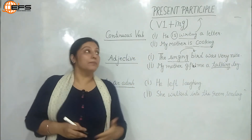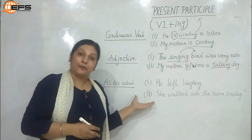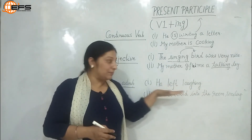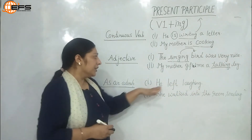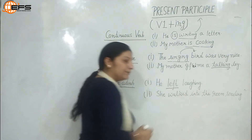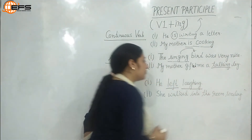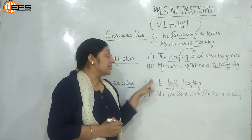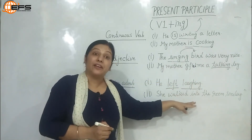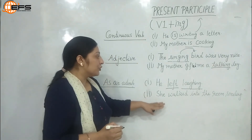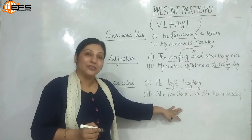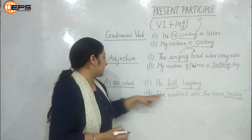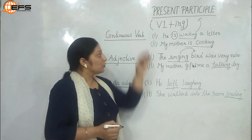The next role of present participle is as an adverb. When two verbs exist in parallel — one finite and one non-finite — the present participle acts as an adverb. For example: 'He left laughing' — here 'left' is the finite verb and 'laughing' is the present participle acting as an adverb, answering the question 'how'. How did he leave? He left laughing. Another example: 'She walked into the room smiling' — 'smiling' is present participle acting as an adverb.